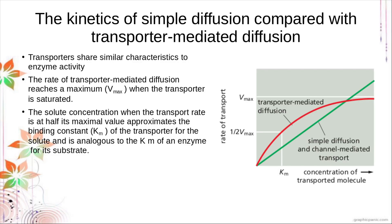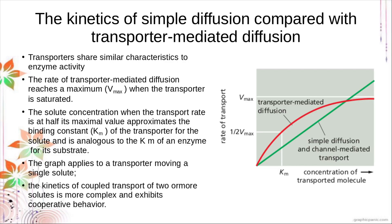The solute concentration when the transport rate is at half maximum is its Km, similar to the Michaelis constant of your transporter. The Michaelis constant gives us an idea of how easily a solute binds to your transporter. This graph applies to a transporter moving a single solute; the kinetics of coupled transport of two or more solutes is more complex and exhibits cooperative behavior.